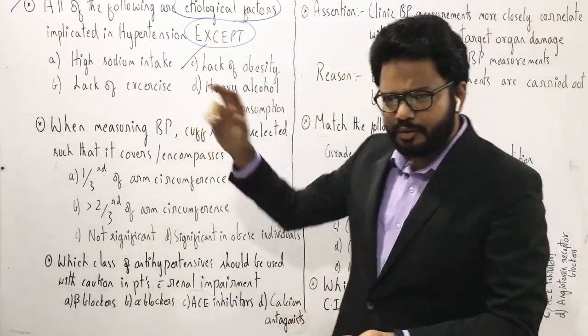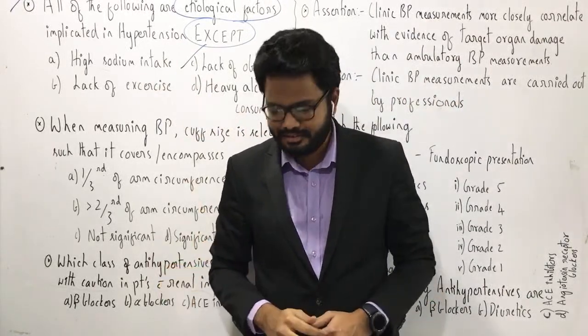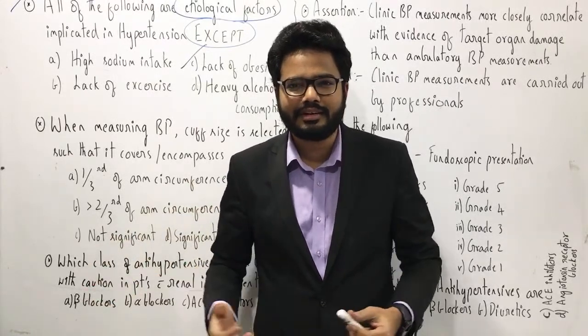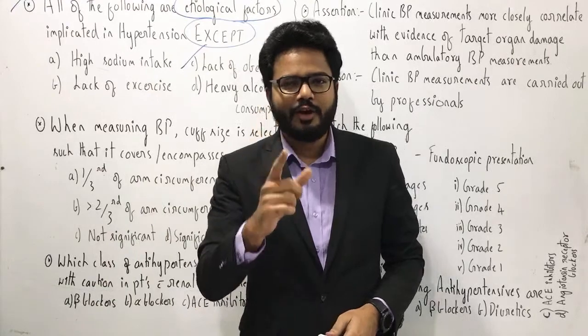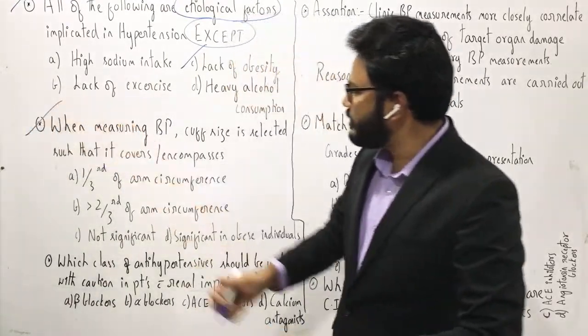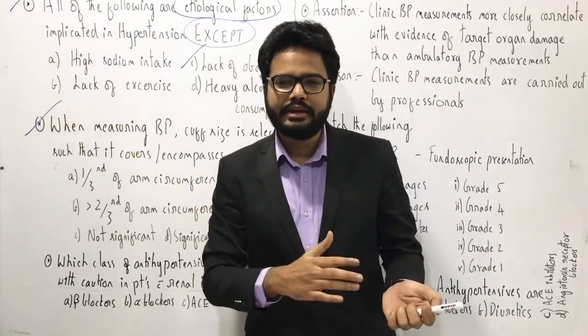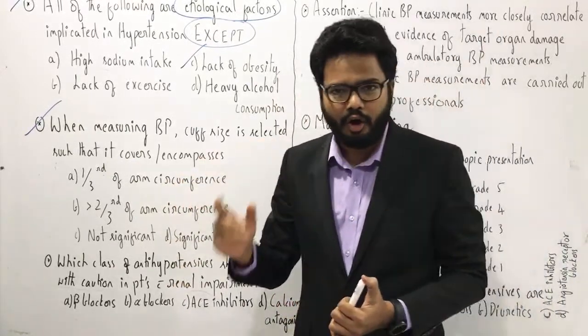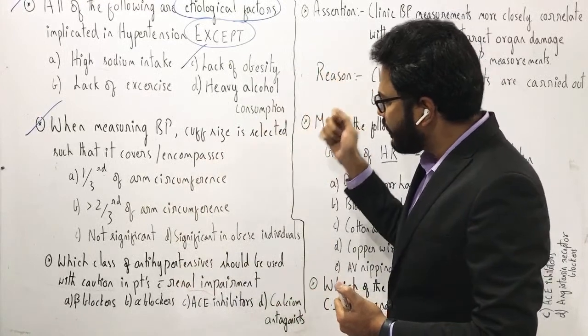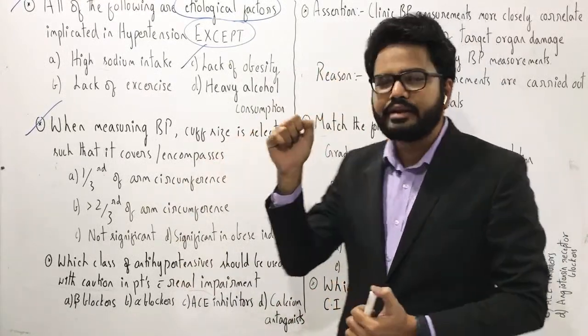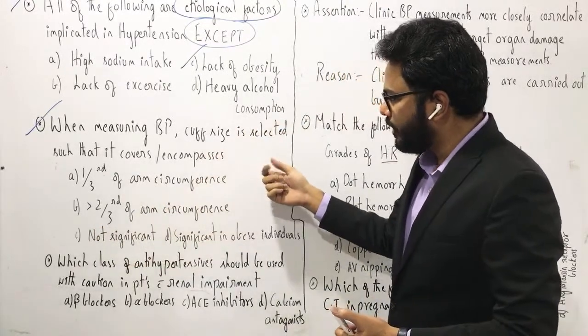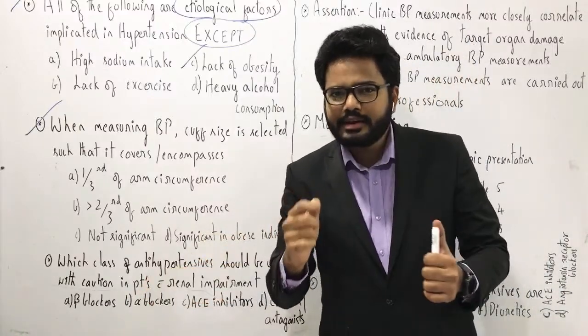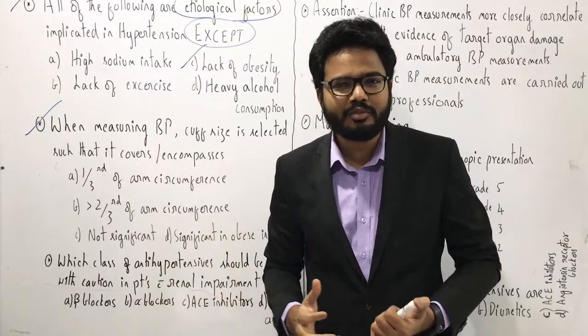Lack of exercise would tilt the balance towards unhealthy lifestyle, which can be a factor responsible for hypertension. Now, let's move on to the next question. When measuring blood pressure, the cuff size is selected such that it covers or encompasses? Option A, one-third of arm circumference. Option B, greater than two-thirds of arm circumference. Option C, not significant. Or option D, only significant in case of obese patients. So which option do you think is more appropriate?